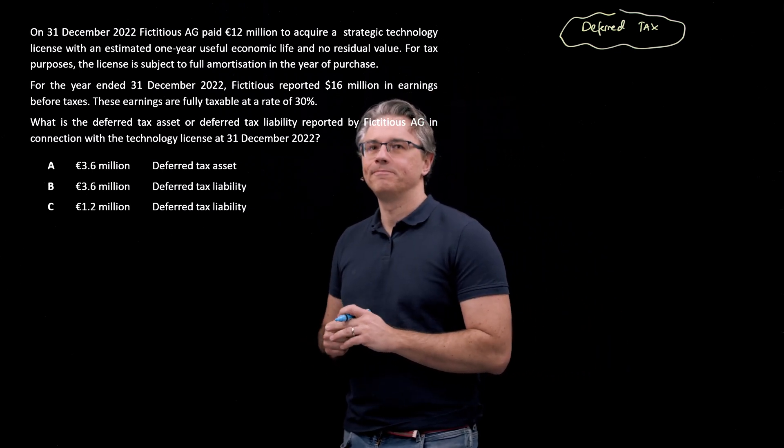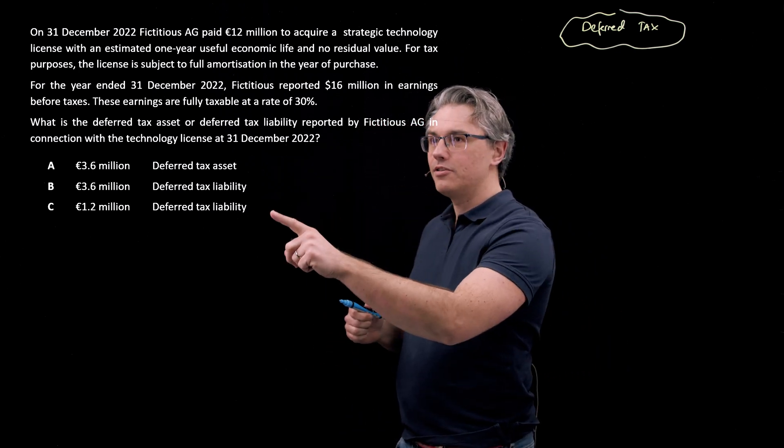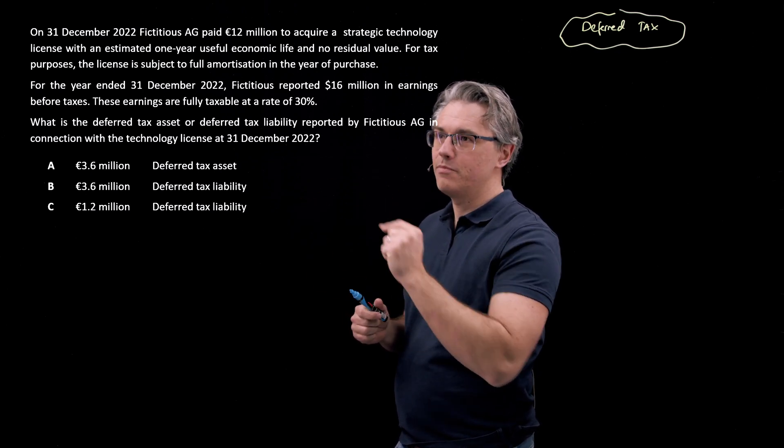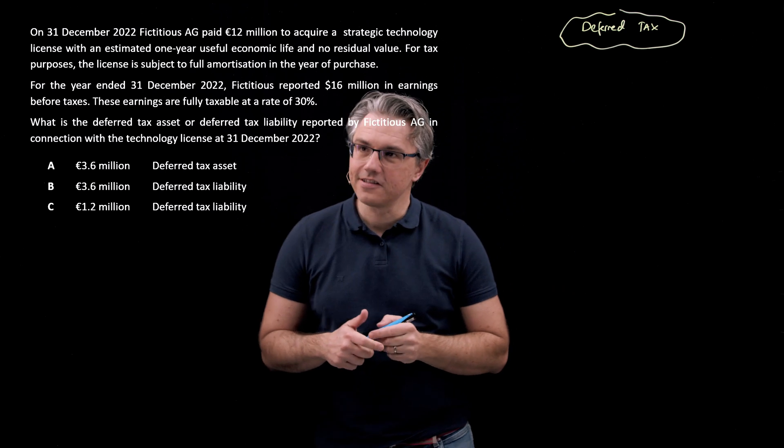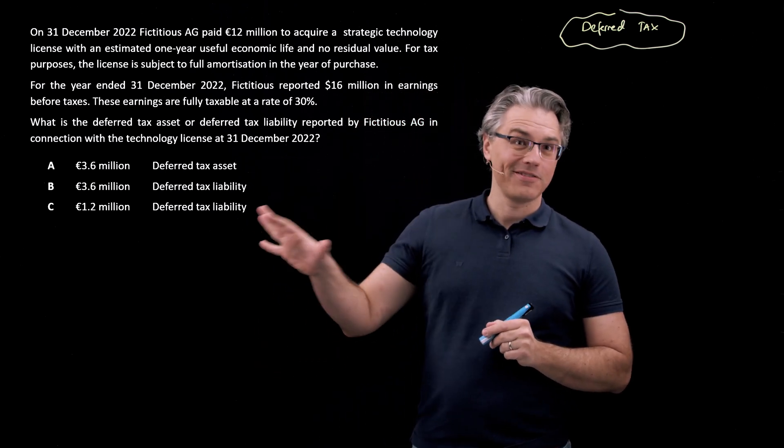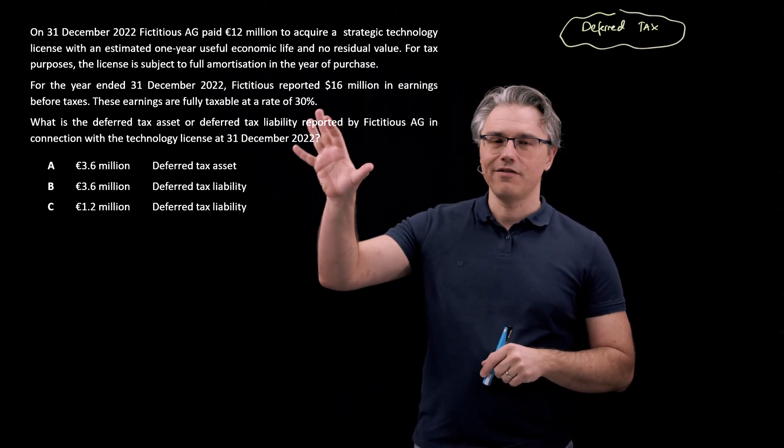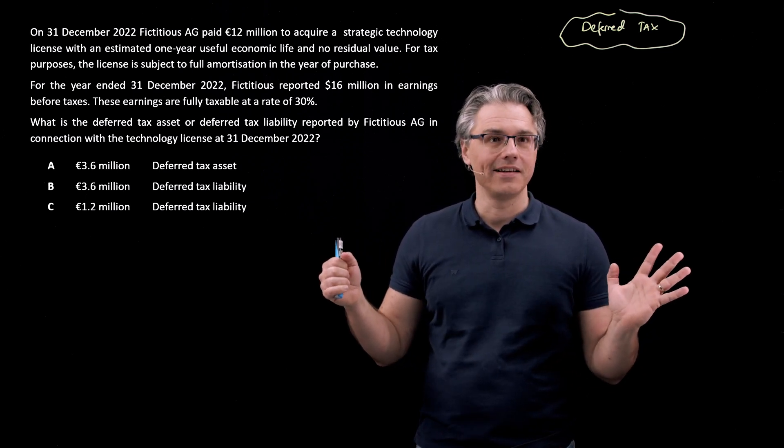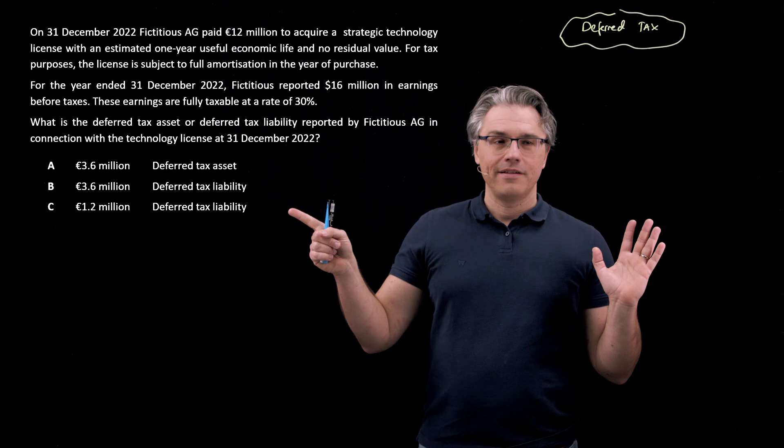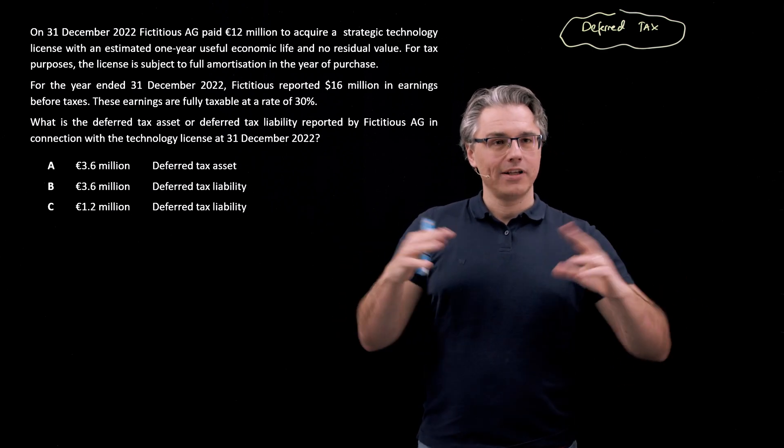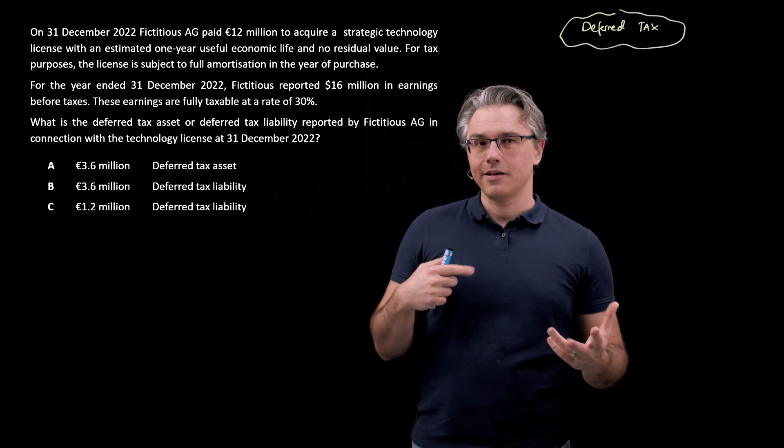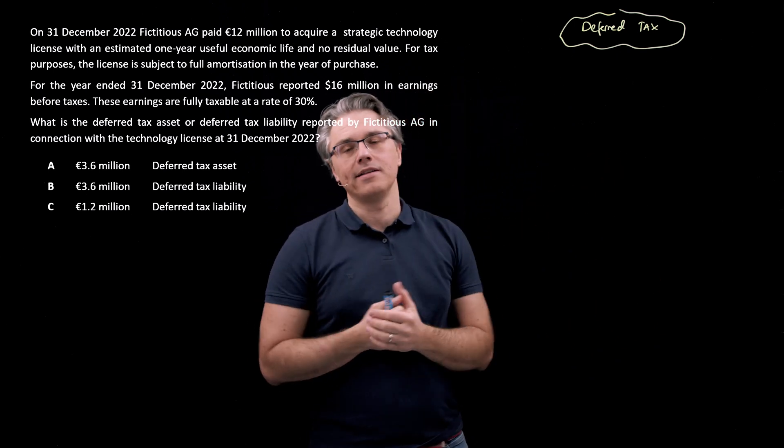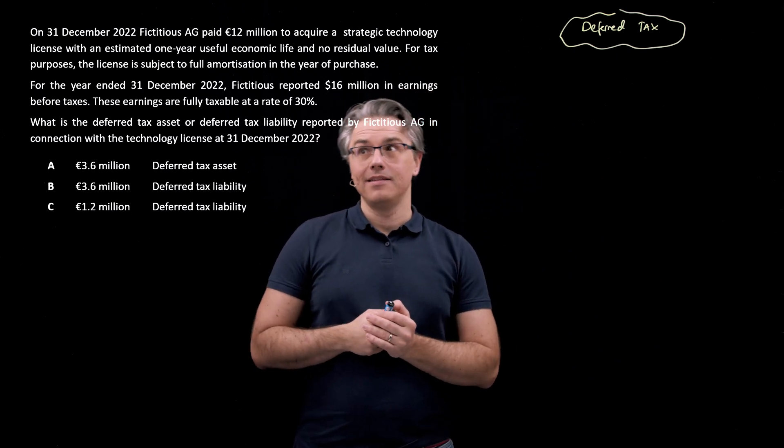In the previous video, we established that the correct answer to this question is answer B, 3.6 million and a deferred tax liability. So we're not solving this question. I just have it up for the purposes of using data. We know the answer. Now I want to explore what happens in the balance sheet and income statement. But also before that, let's take it one step forward and see what will happen in the next year.